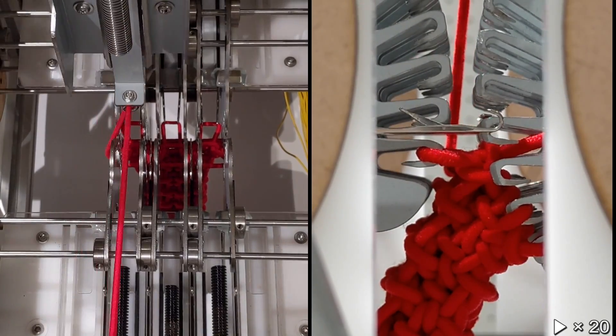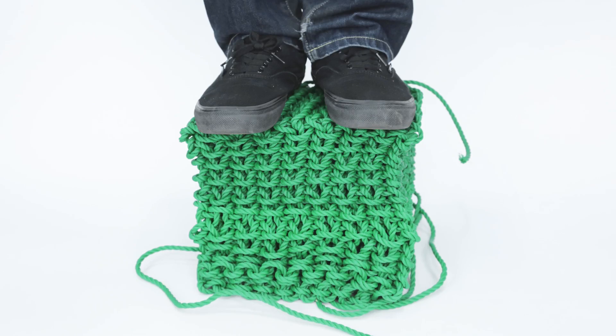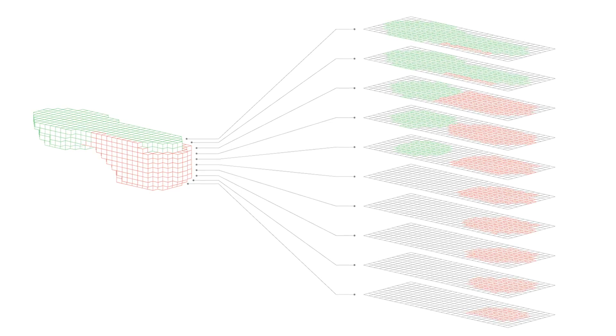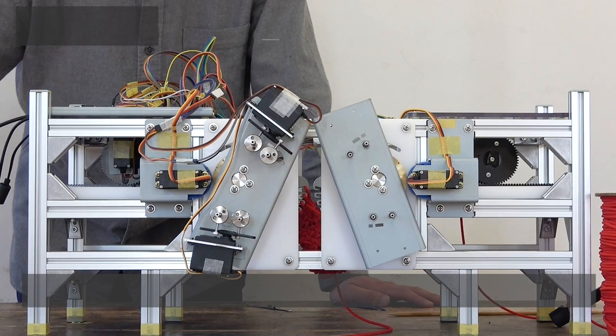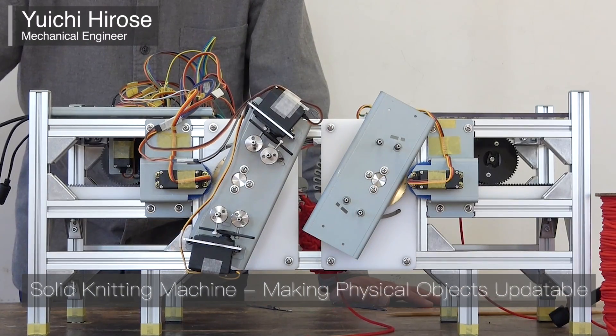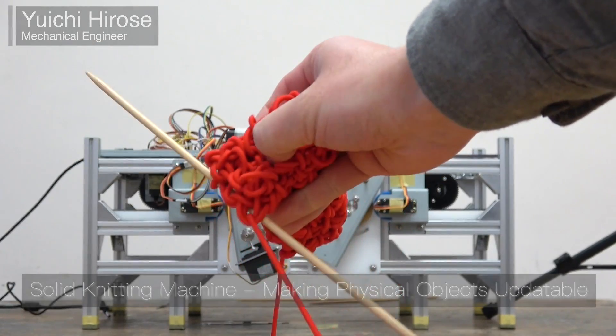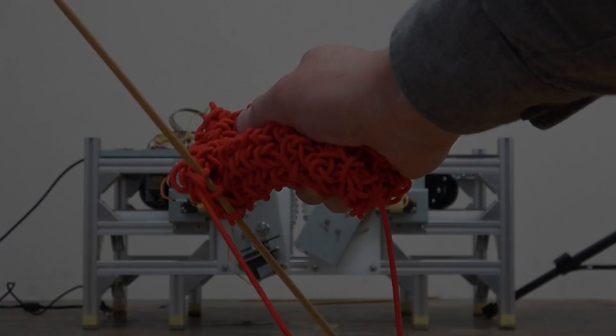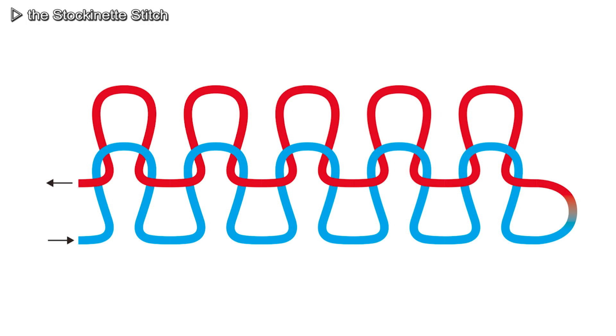The solid knitting machine uses its intricate design to knit and create objects with solid interiors. In solid knitting,